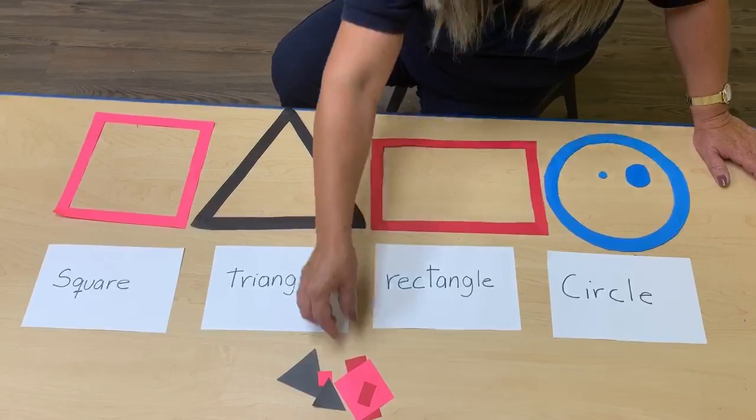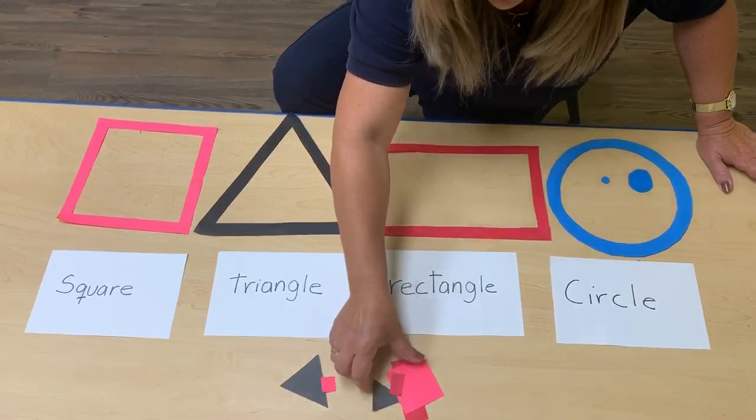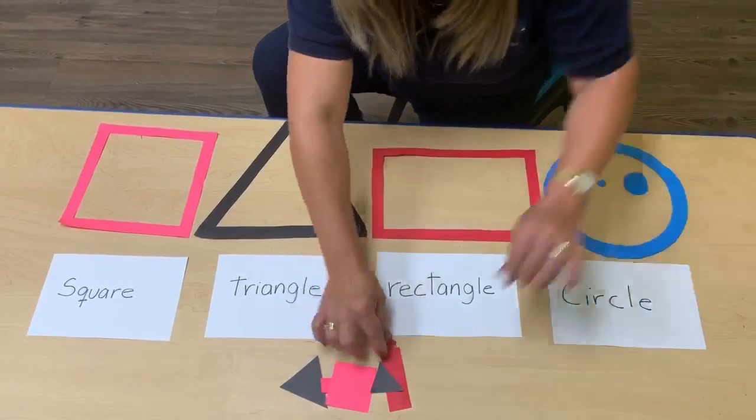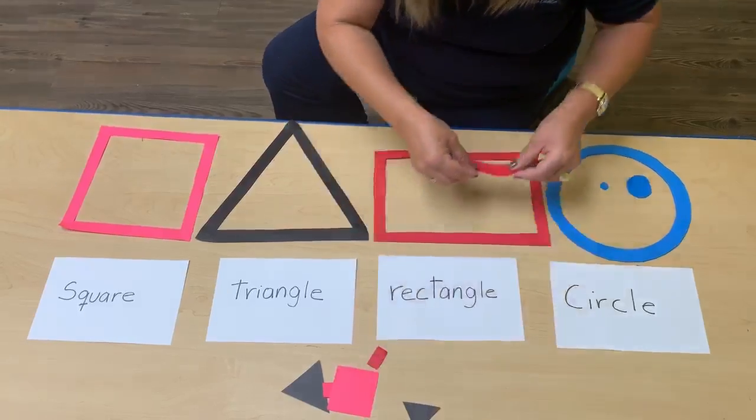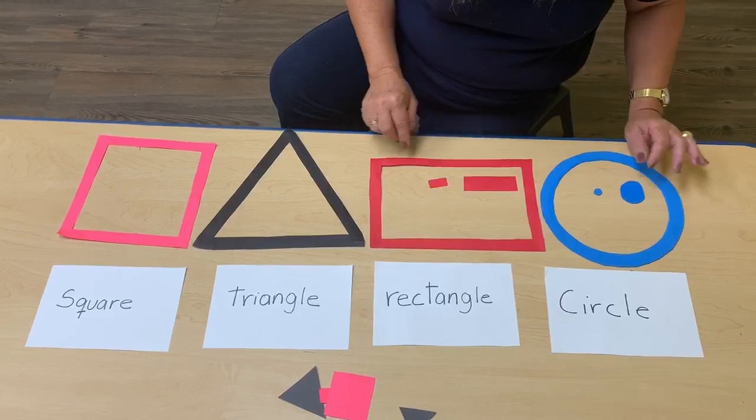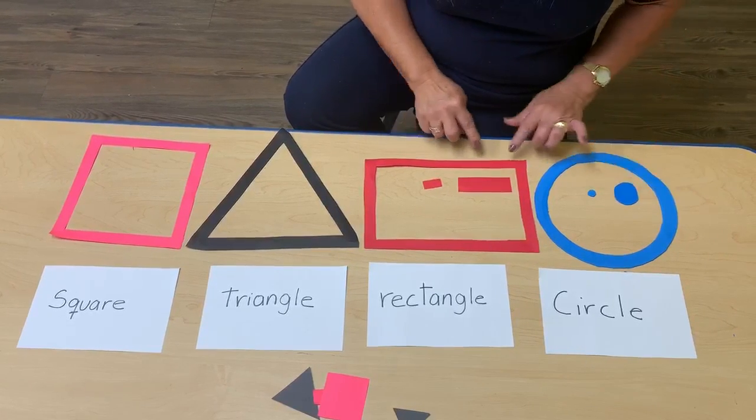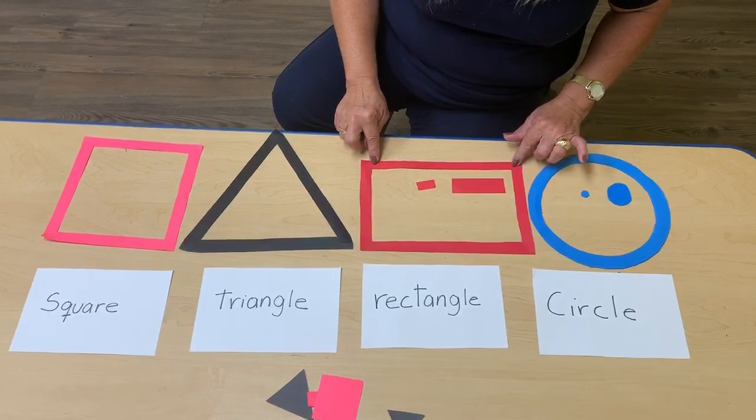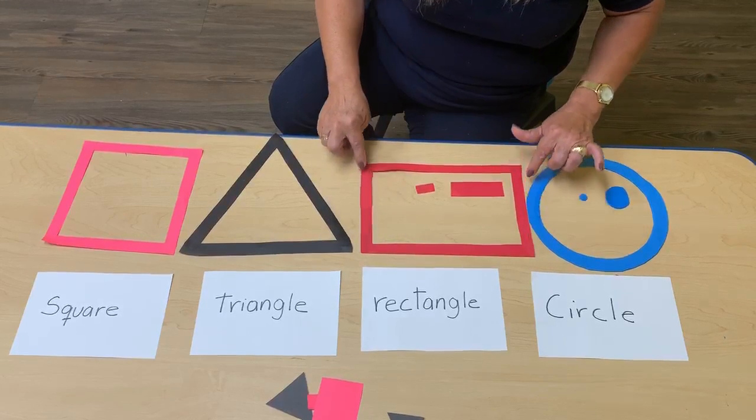And now rectangle. I've got it. Rectangle, big and little. The rectangle has two long sides and two short sides.